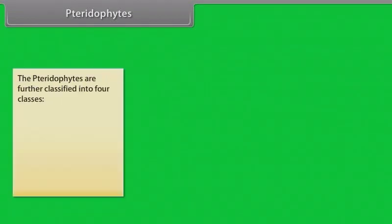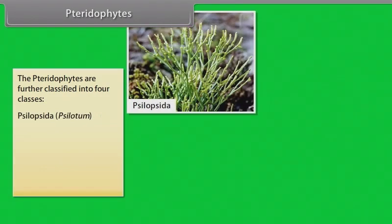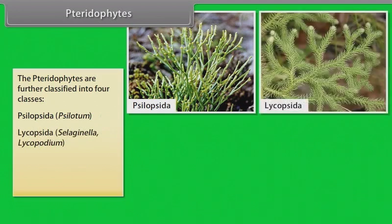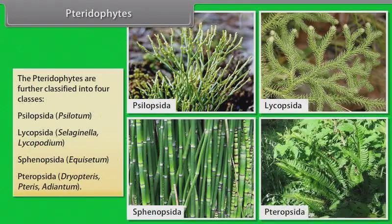The pteridophytes are further classified into four classes: Psilopsida, psilotum, Lycopxida, selaginella, lycopodium, Sphenopsida, equisetum, Pteropsida, dryopteris, pteris, adiantum.